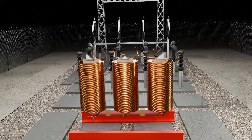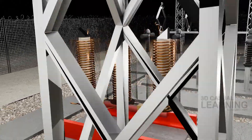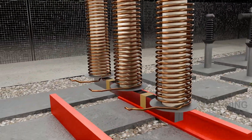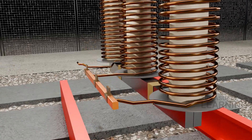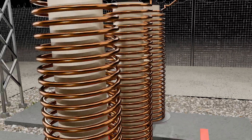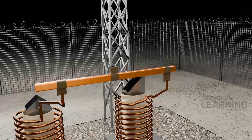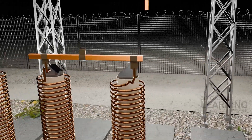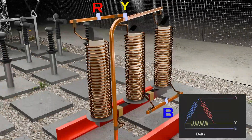In a delta connection, the primary coils are connected in a closed loop in the shape of a triangle. Each winding is connected between two phases of the three-phase electrical system, forming a closed circuit. The delta connection is commonly used on the high-voltage side of the transformer in power distribution systems.